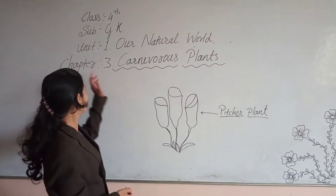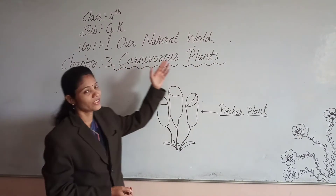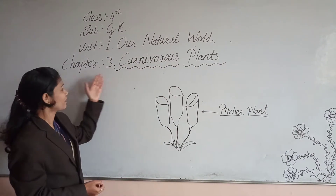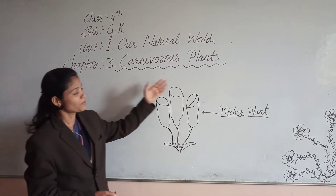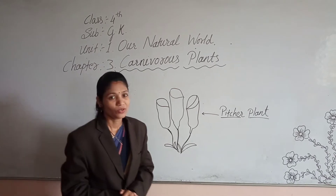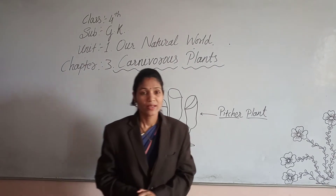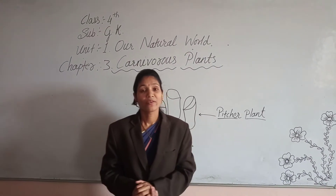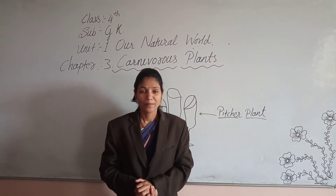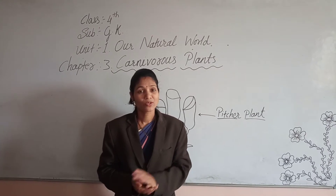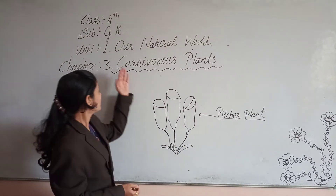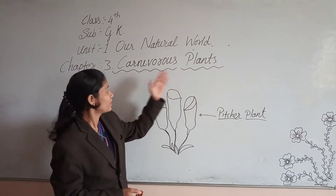Today we will cover Unit 1, Our Natural World of Chapter Number 3, Carnivorous Plants, of Class 4, subject GK. So students, you have studied carnivorous animals, but have you thought that there can be a carnivorous plant? Today we will study carnivorous plants in our natural world.